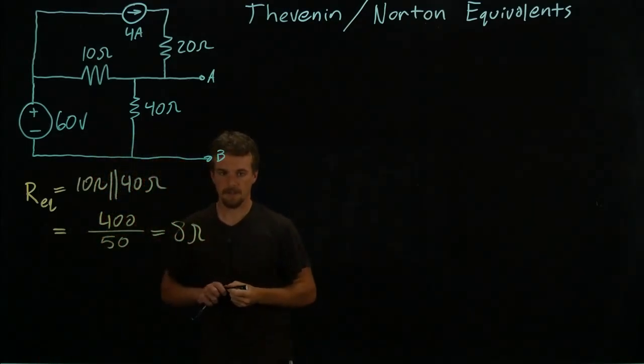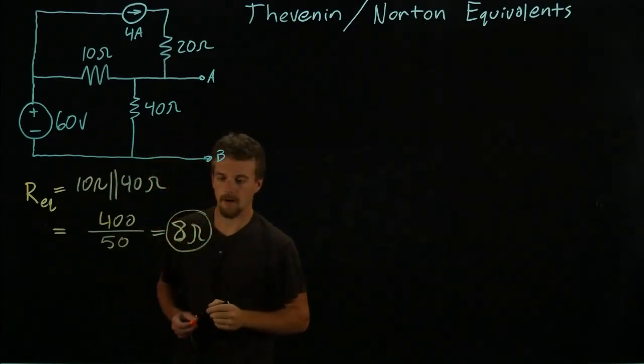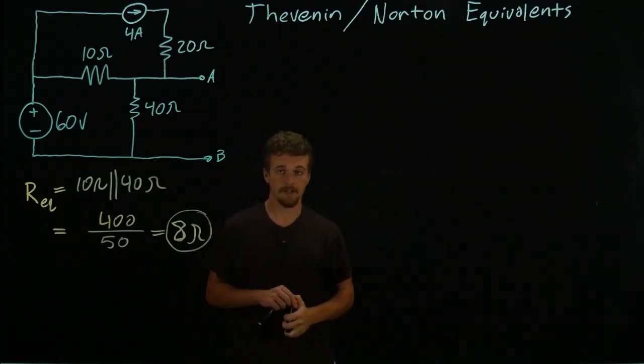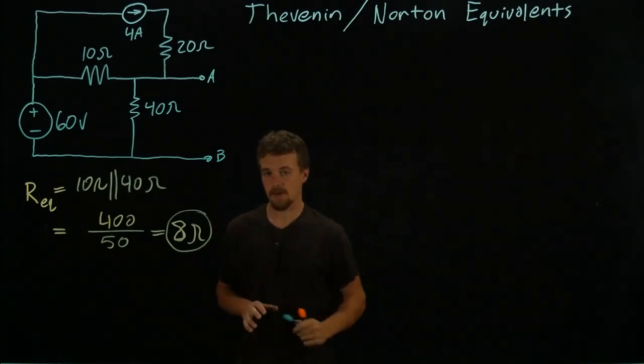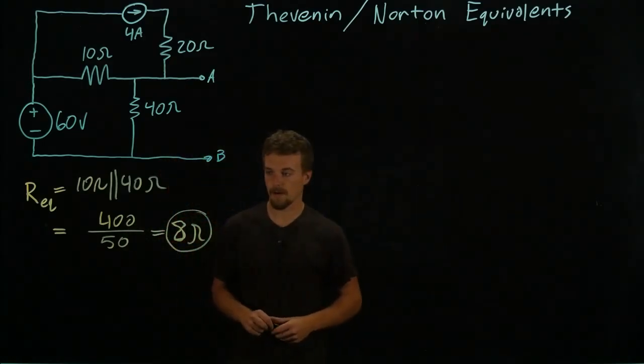So this is R for both circuits actually. It's just going to be in parallel with the current source and in series with the voltage source, but this is R_Thevenin and R_Norton.